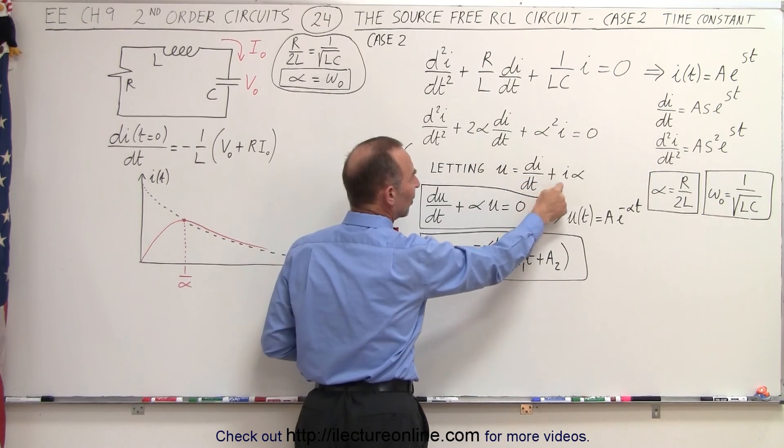Then through a clever trick by pulling in another variable and letting it equal di/dt plus i times alpha, we were able to come up with a first order differential equation to replace a second order differential equation which had the general solution of some constant times e to the minus alpha t. And then when we found that solution, we found the solution had the form e to the minus alpha t times the quantity A₁t plus A₂.